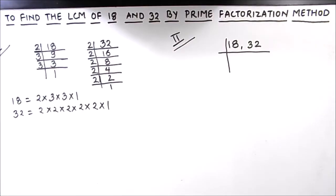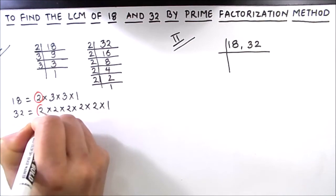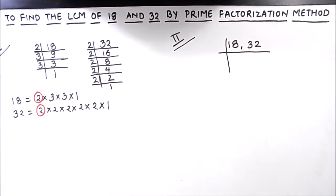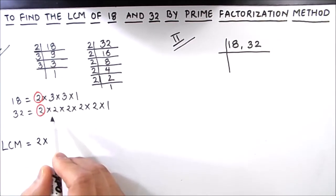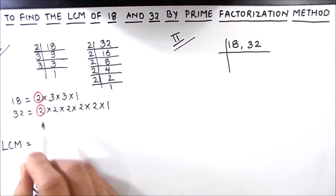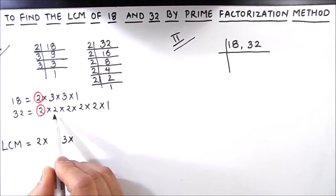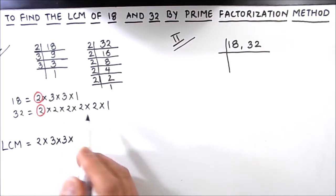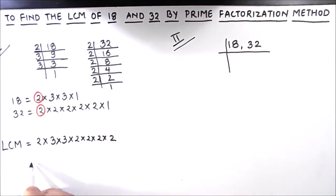For finding the LCM of the two numbers we first separate the common factors between them. The common factor here is only 2 — and 1 is common to all numbers, so we skip it. For finding the LCM, we write the common factor only once, then take the product of the remaining factors. 2 is the common factor; the remaining factors of 18 are 3 and 3, and the remaining factors of 32 are 2 × 2 × 2 × 2.